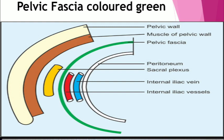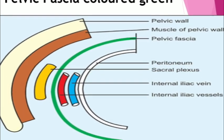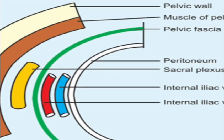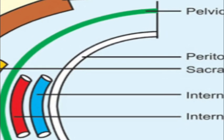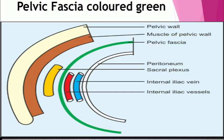Here is an illustration of a section through the pelvic fascia. Take a close look at the diagram. You can see the layers in the pelvic wall, including the muscles of the pelvic wall and the peritoneum. You can see the pelvic fascia, which is colored green.